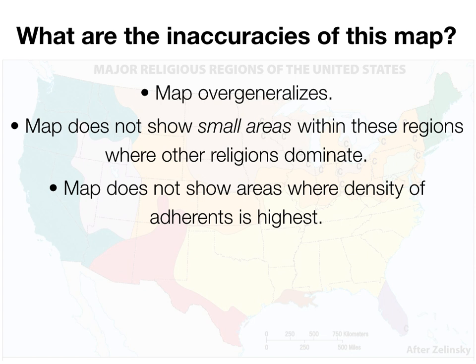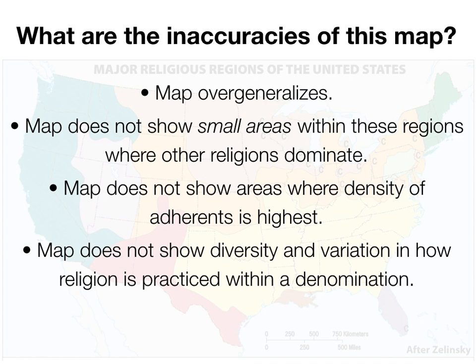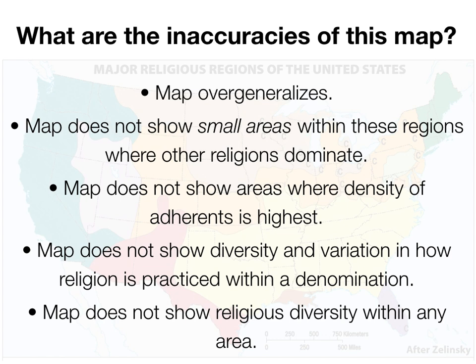This map also does not show areas where the density of adherents is highest. We don't really know within each religion or sect how closely people are practicing or what percentage are adherents. This map also does not show diversity or variation in how the religion is practiced within a denomination — there may be quite a bit of regional diversity in how religion is actually put into practice on the ground. Additionally, this map does not show religious diversity within any one area; there may be significant minority religions not listed, even where a predominant religion holds 50% or more.